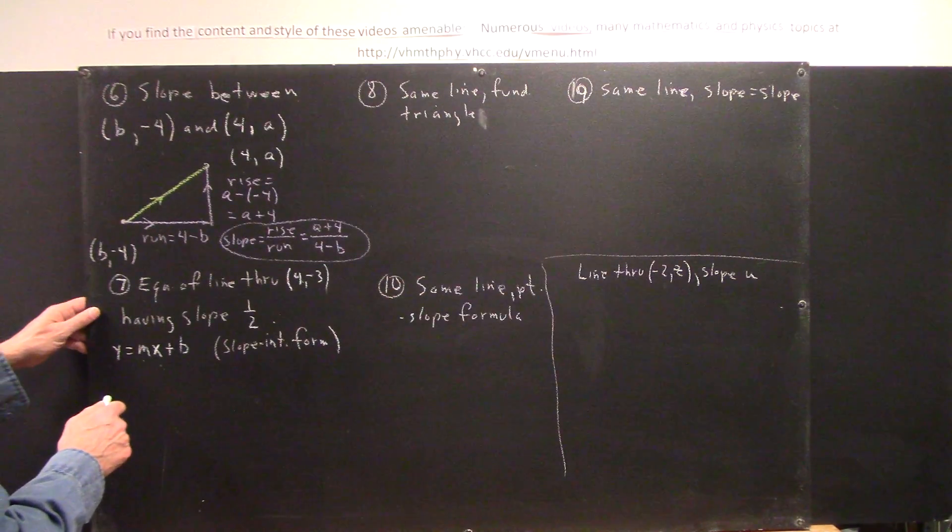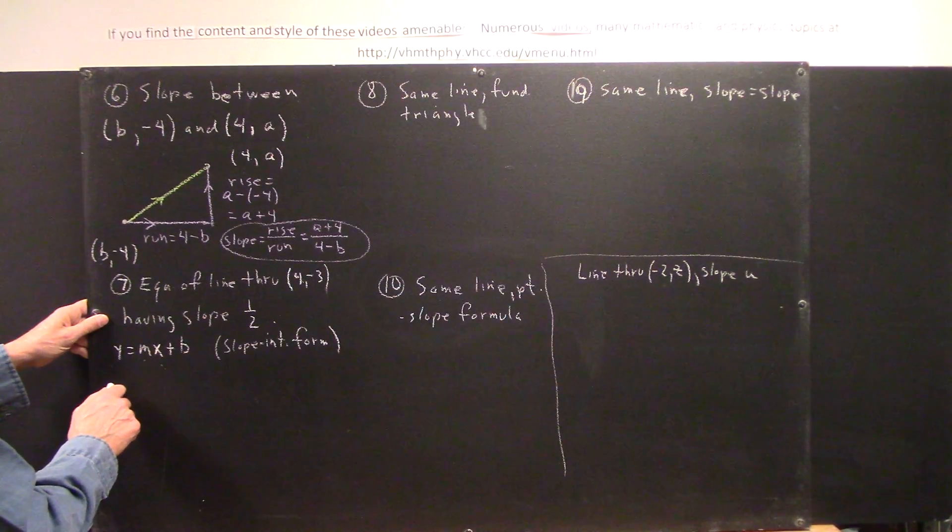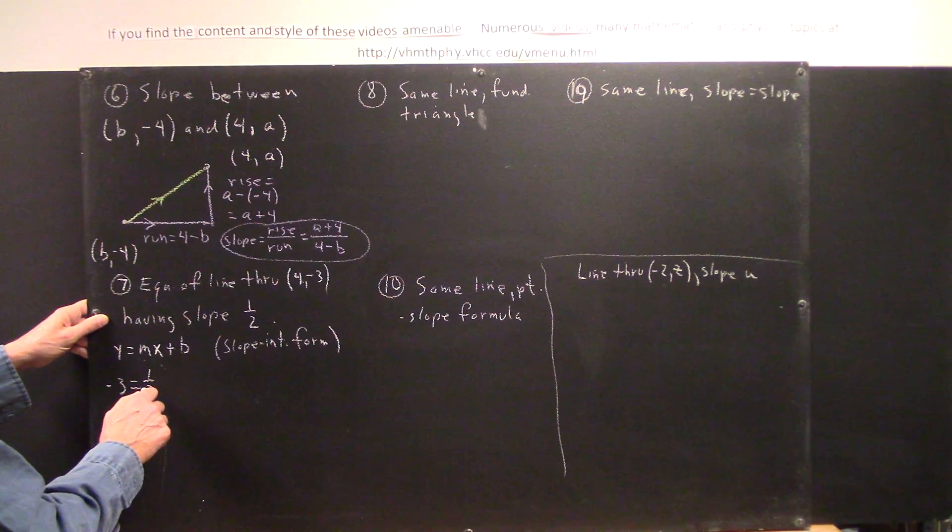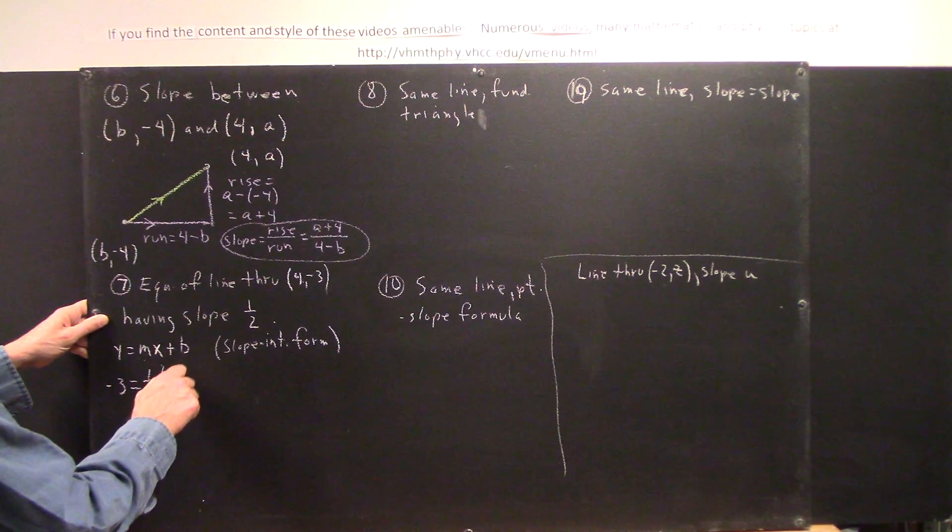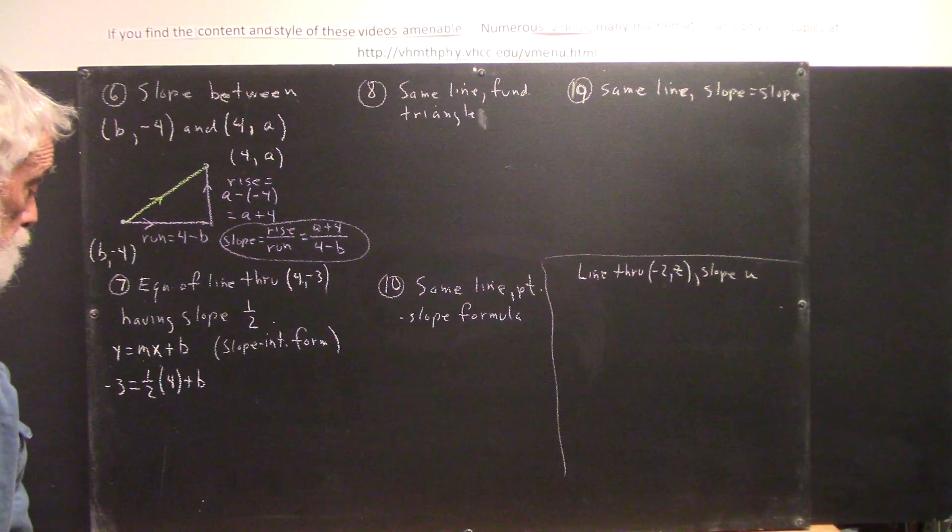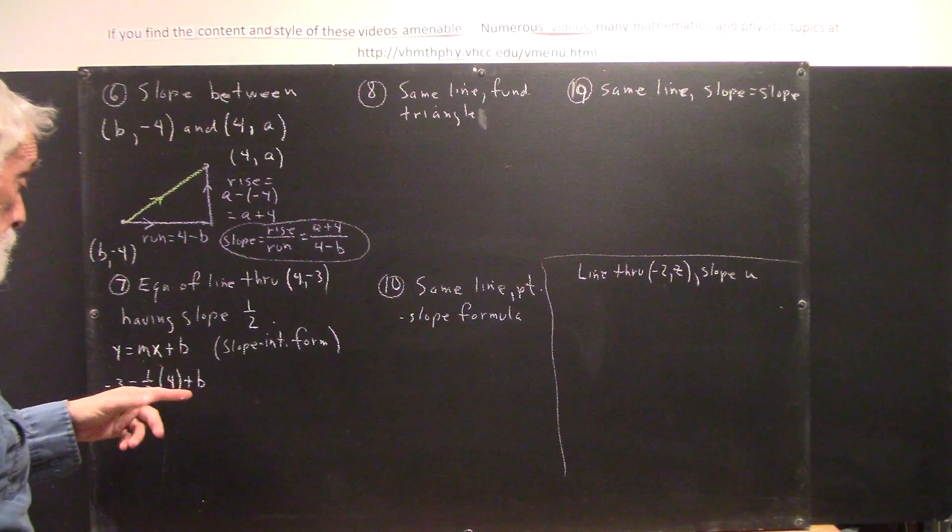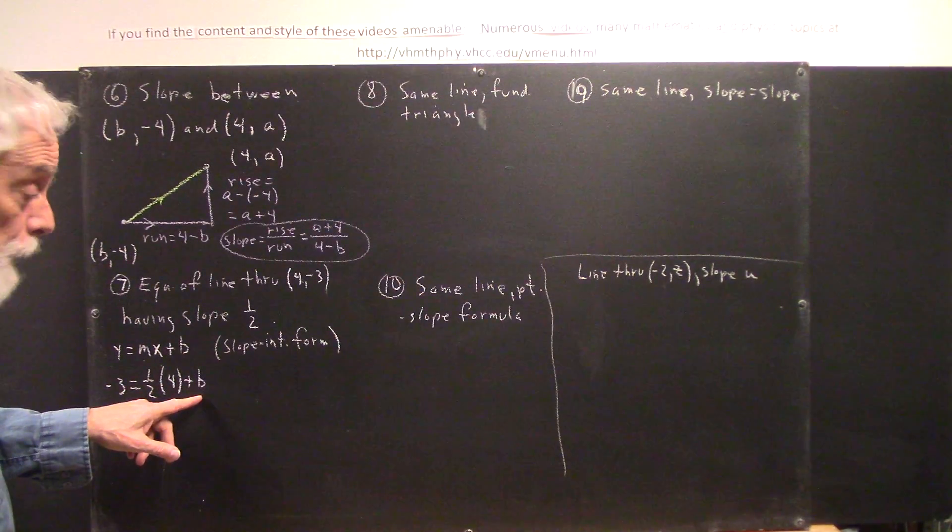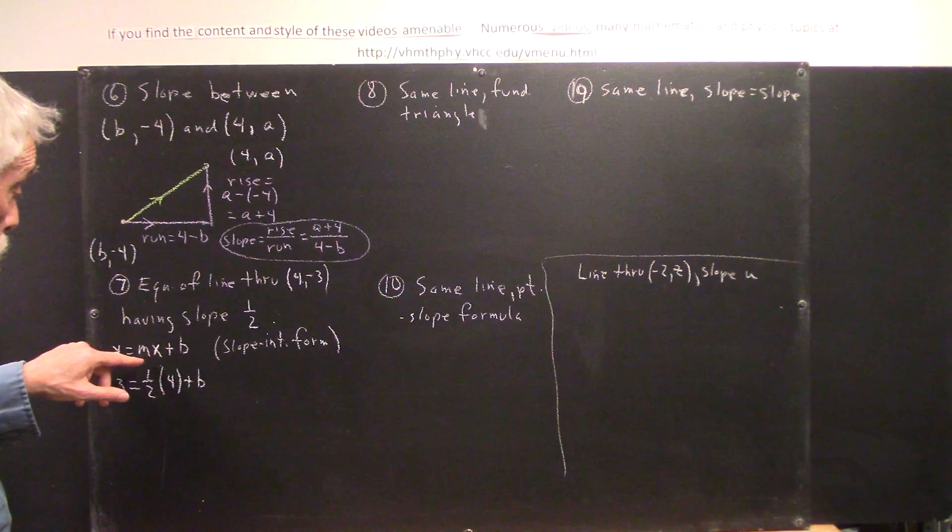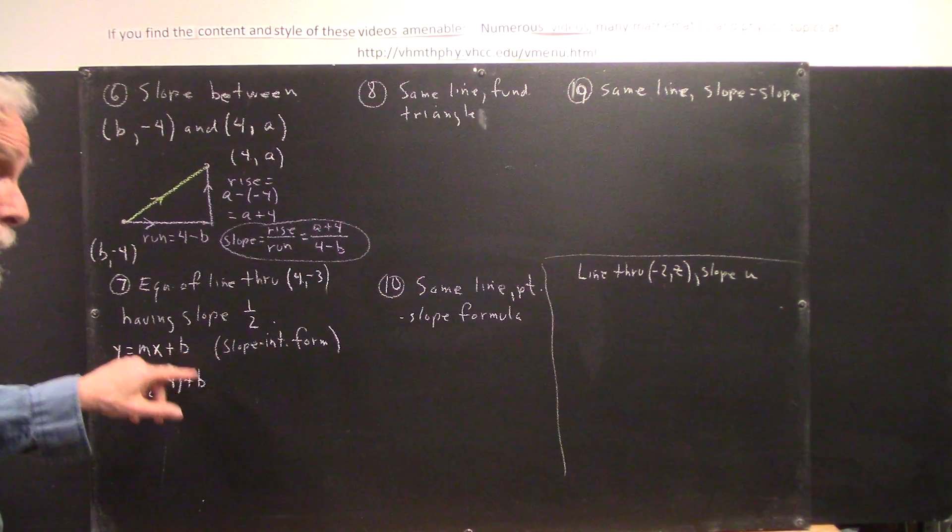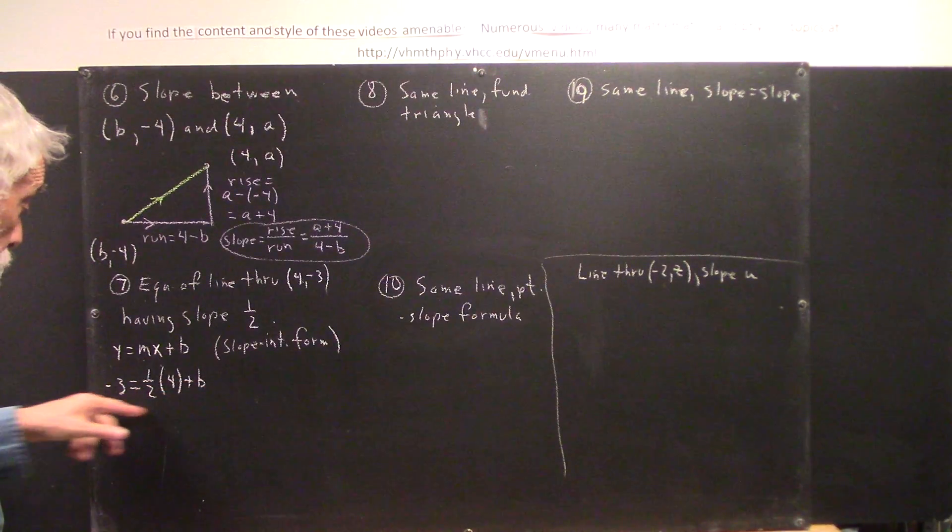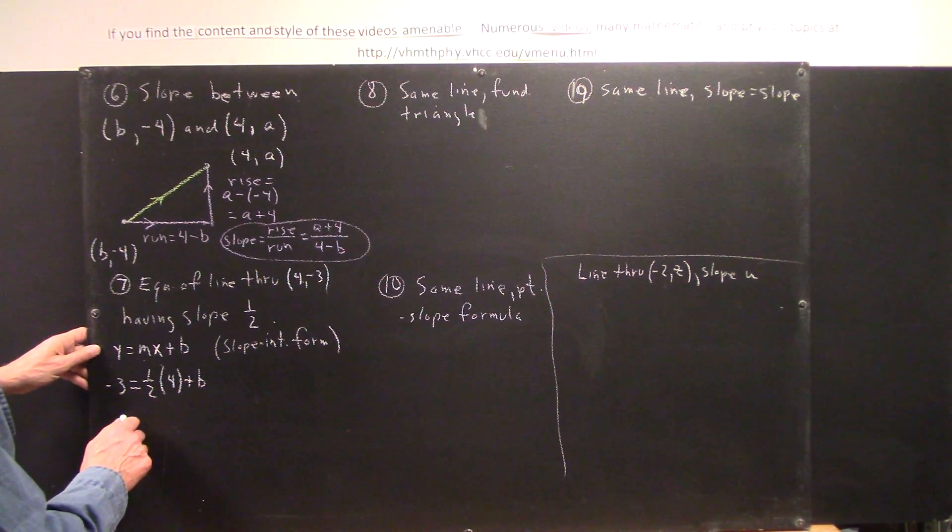So we get, be careful, y is negative 3, slope is 1 half, and x is 4 plus b. So now, how many unknowns do we have here? We only have b as an unknown. Now, we know the slope m, so we know what number is going to go here. We've got to find the number that goes here, the number for b. And we can do that by simply solving this equation.